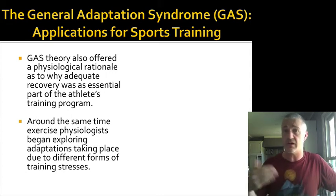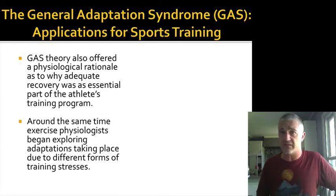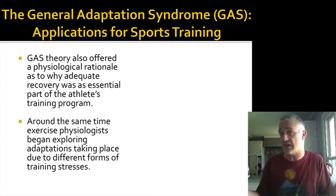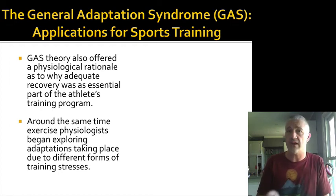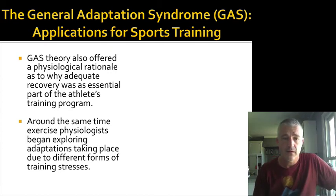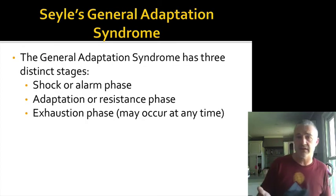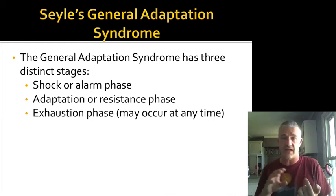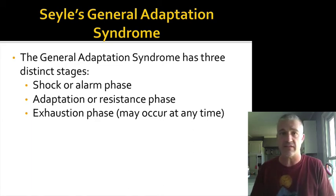It's important to understand why there needs to be a recovery period in athletic training. Selye's model showed that if a stressor stays on too long, the third stage is a failure state — not something you want in a training program. So you have to build in that recovery. Physiologists started to look at how different adaptations take place due to different training stressors. Selye's theory identifies three stages: the alarm or shock phase, the adaptation or resistance phase, and the exhaustion phase.